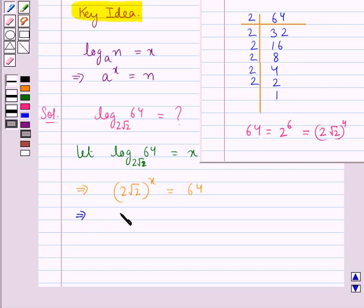So we have 2 root 2 whole to the power of x is equal to 2 root 2 whole to the power of 4. So this means that x is equal to 4.